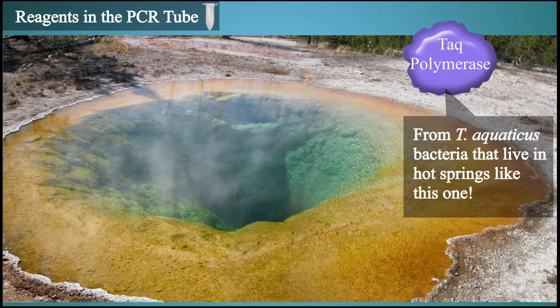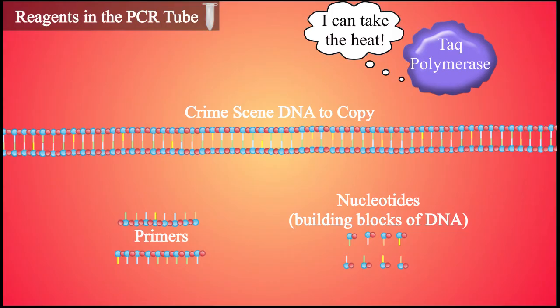Taq polymerase comes from a bacterium that lives in hot springs with nearly boiling water. Since PCR uses high temperatures, this type of DNA polymerase is necessary. Other types of polymerase would denature at these high temperatures.